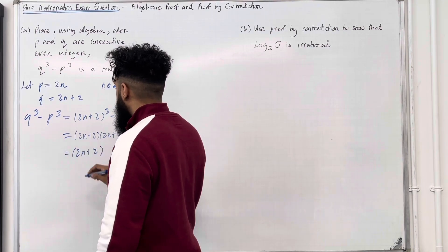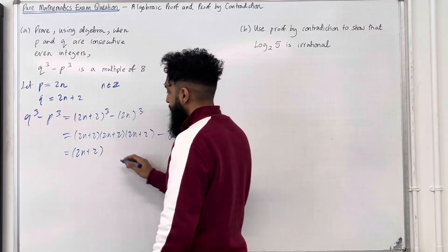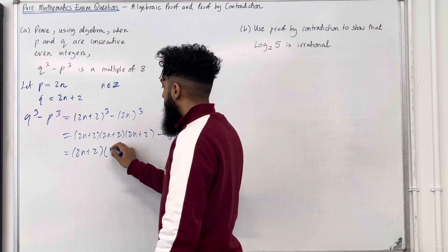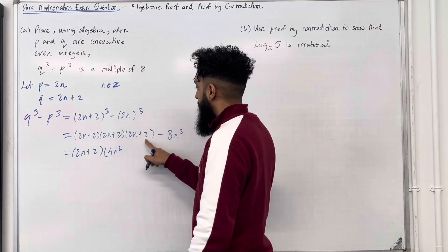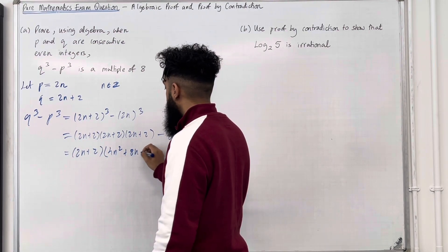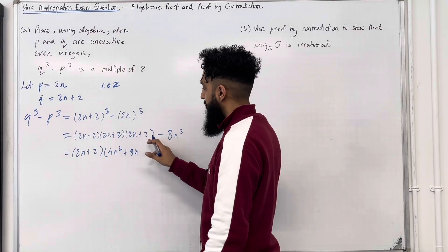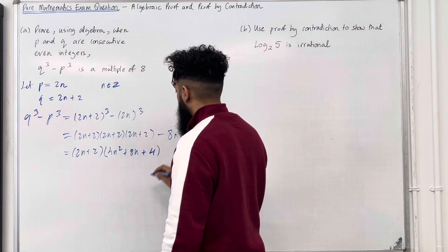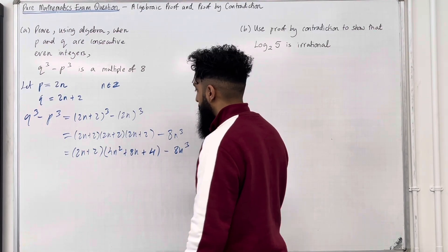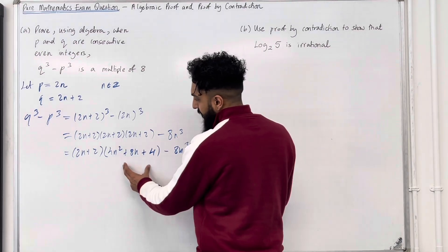So I'll start off by expanding these double brackets here. So I've got 4N squared, 4N, 4N, that is 8N added together and then plus 4, take away 8N cubed. Now we're going to expand this bracket with this bracket here.